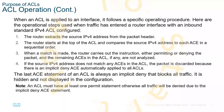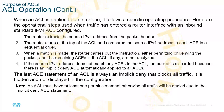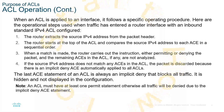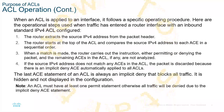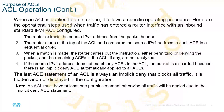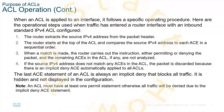When an ACL is applied to an interface, it follows a very specific set of rules. First, the router extracts the source IP information from the packet header. Second, the router starts at the top of the ACL and compares the source address to each ACE in sequential order. When a match is made, the router carries out the instructions — either permitting or denying — based off of the ACE. The remaining ACEs are not even analyzed; the first match is what is processed. Lastly, if there is a source IP address that does not match anything, the packet is discarded due to the implicit deny at the very end. The last ACE statement of all ACLs is the implicit deny.